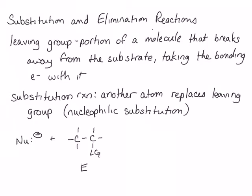The nucleophile donates its electrons to form a new bond to the electrophilic carbon — the carbon bound to the leaving group — and the leaving group leaves, taking its bonding electrons with it. This is called a nucleophilic substitution reaction because the nucleophile substitutes for the leaving group on the electrophile, or substrate.